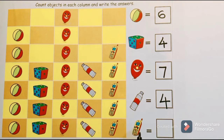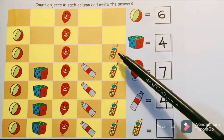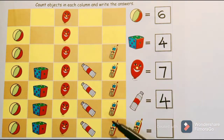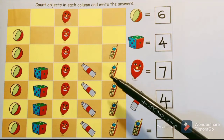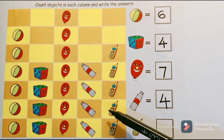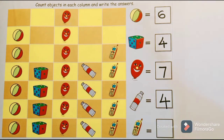The next object is a phone. Let us count the number of phones in this column: one, two, three, four, five — there are five phones.